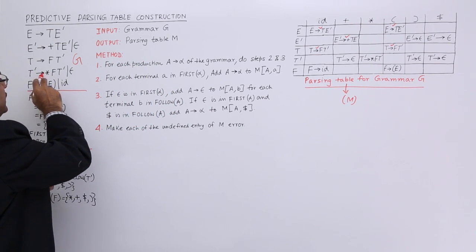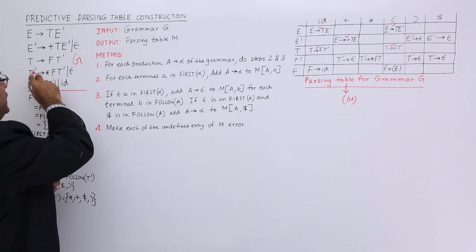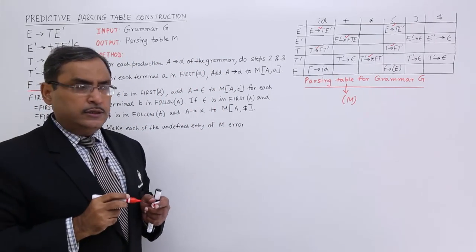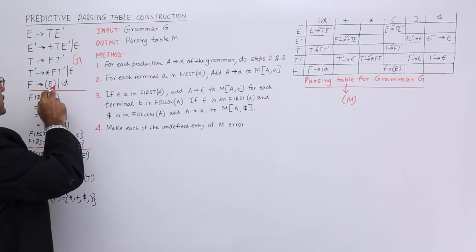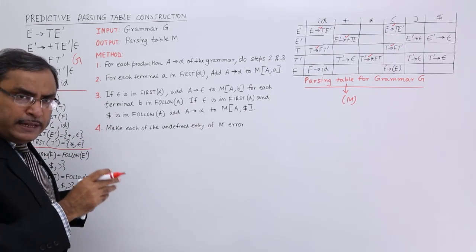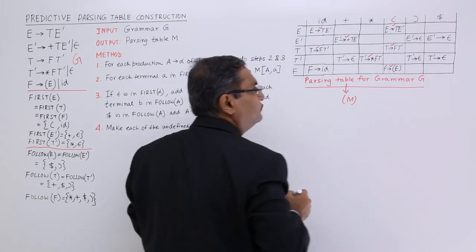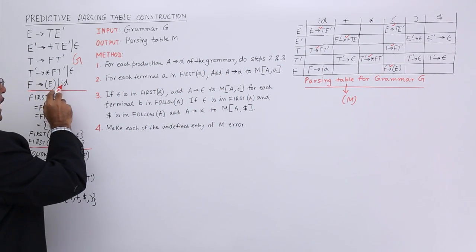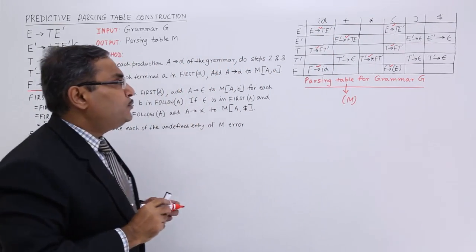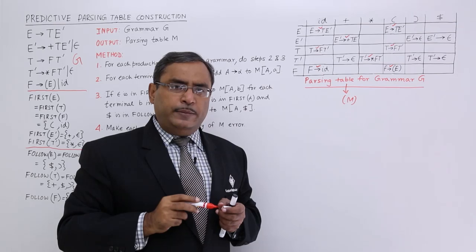Now, T' produces star FT'. So A produces alpha, first of alpha means star. So at row T', column star, I should have T' produces star FT'. The last one: F produces — first of alpha means first of opening bracket, which is the terminal itself, so F bracket E bracket is entered. And F produces ID goes under the ID column and F row. In this way, applying rule number 2, all these productions have been included in parsing table M.